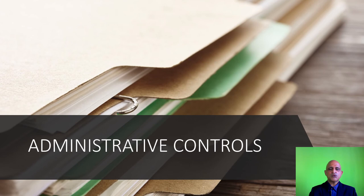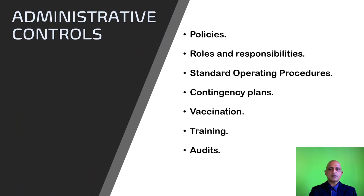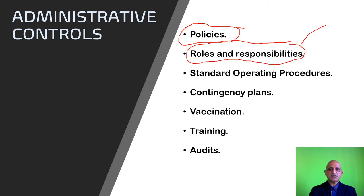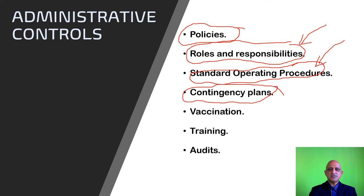We now move on to administrative controls, which comprise the policies as well as the laboratory biorisk management system. These include policies, roles and responsibilities as defined in the laboratory biorisk management manual, standard operating procedures (which are very important and will be discussed in a separate lecture), contingency plans addressing emergencies, vaccination of personnel, training of personnel, and audits which form part of your performance assessment.